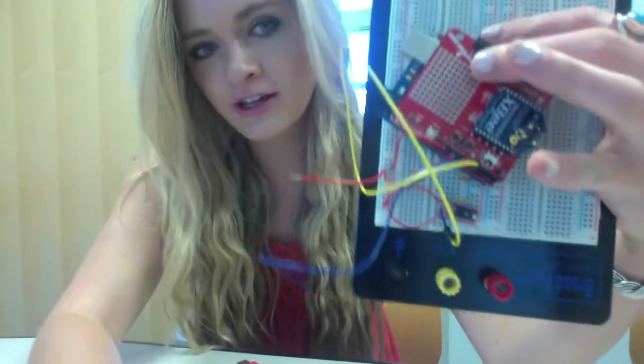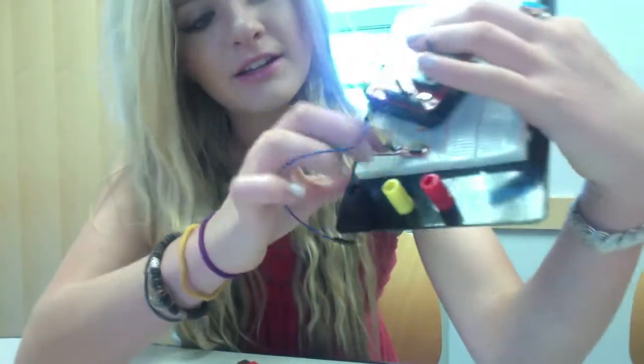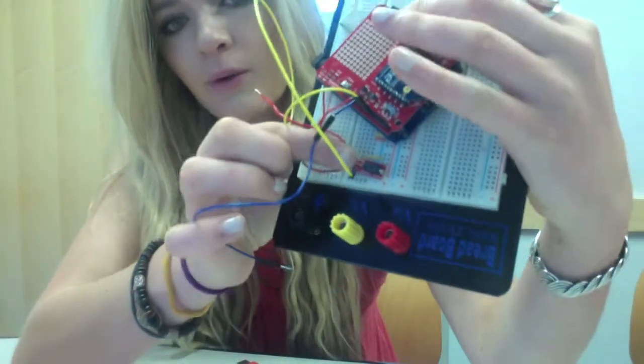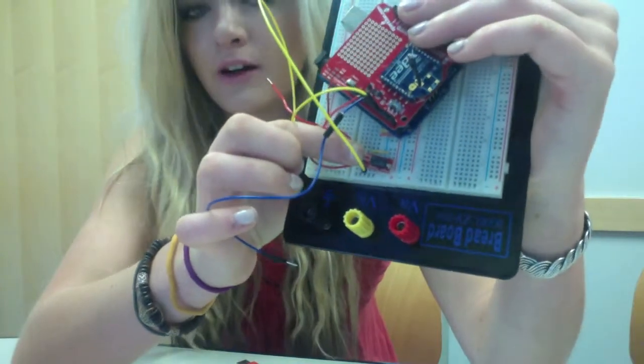This is our humidity sensor circuit. The humidity sensor, which you can see right here, requires about 5 to 5.5 volts to transmit a correct signal.